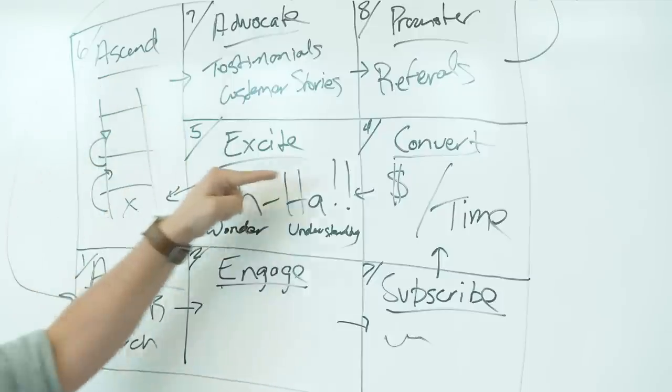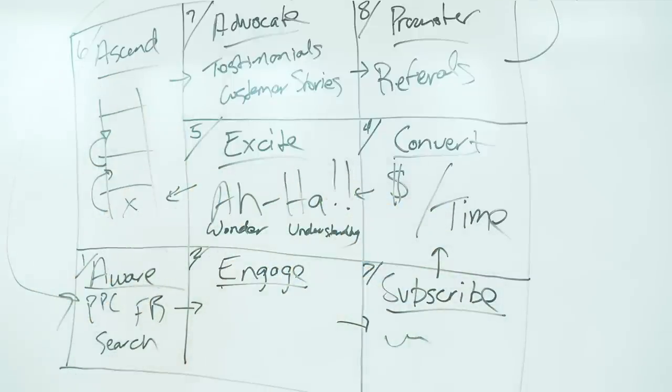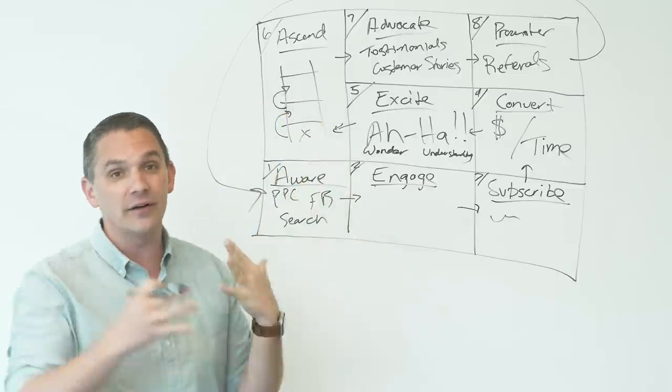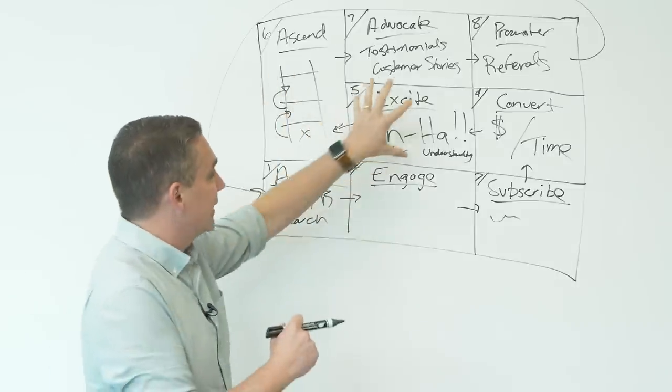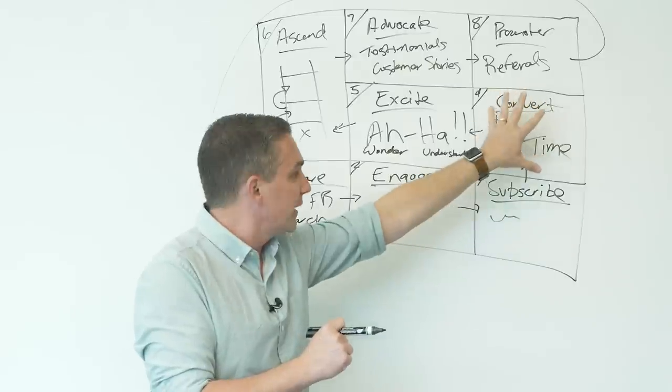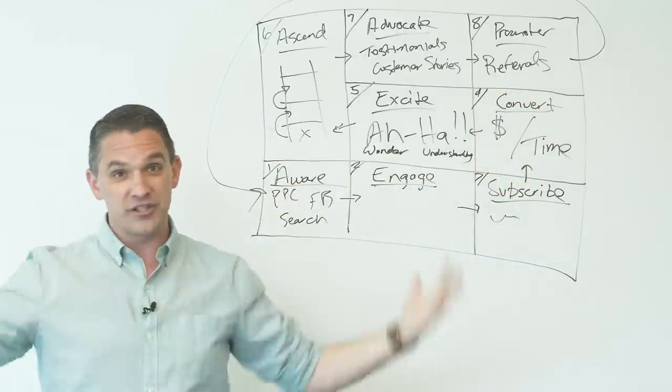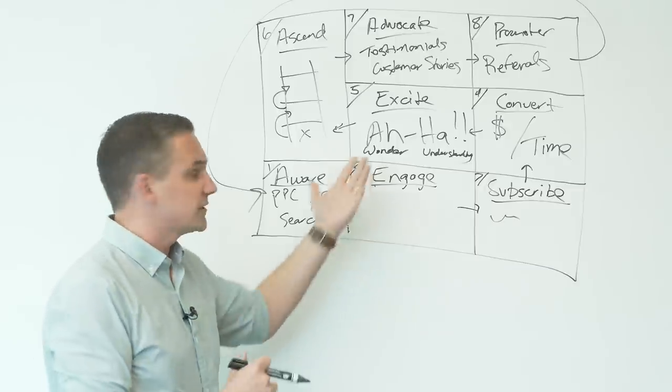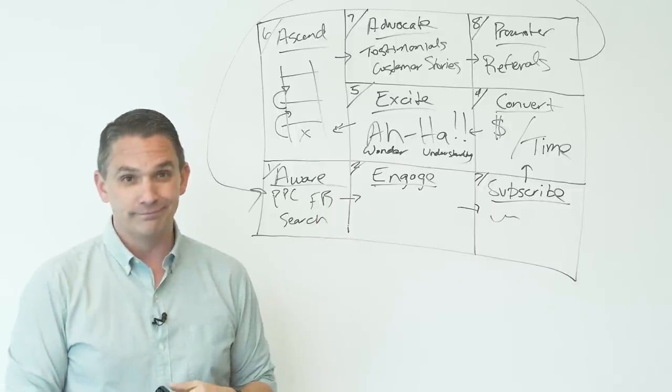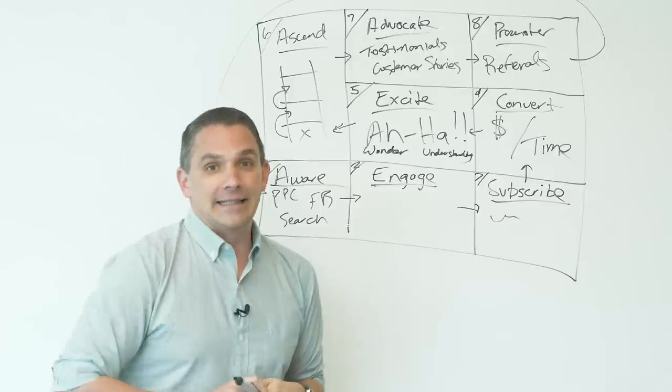Look at your ascension. Are you getting them to ascend? And we generally like to optimize going backwards. We want to make sure that we're maximizing the value of the customers that we have, that we're getting them as excited as possible, that we're getting more to convert, to subscribe, that our engagement's high. Then let's increase the awareness. You don't want to increase the awareness of a broken journey.